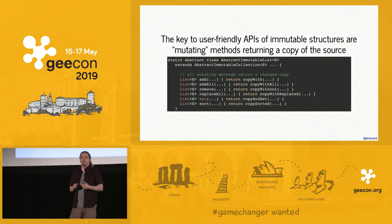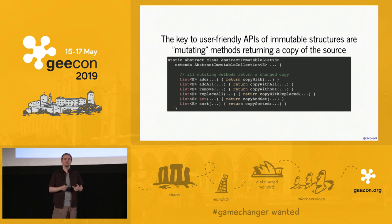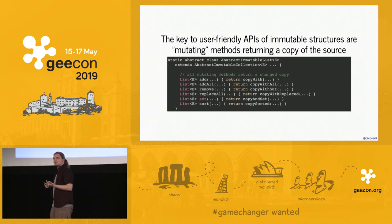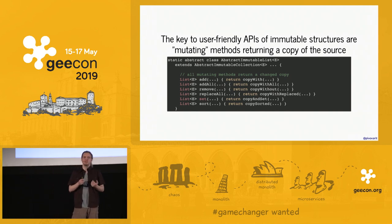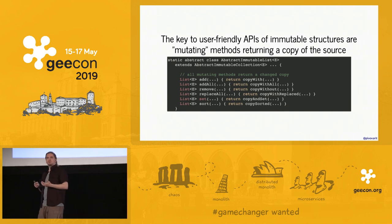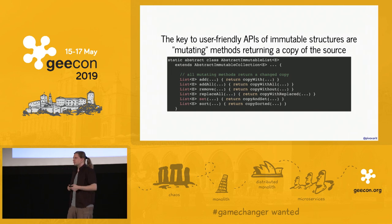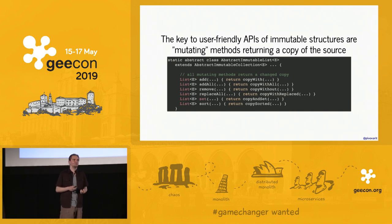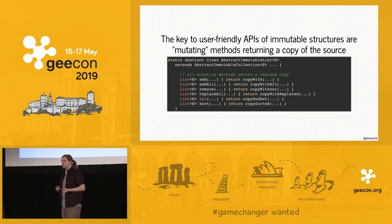What could we do to make it more usable? We'd need to rewrite those APIs. Instead of returning nothing or some metadata, we could spawn a new instance of the collection containing the modification we asked for. So it's not really a mutation of what's internally stored, but more like deriving a new value from what we have. This is actually the key to having user-friendly APIs for immutable structures — you still expose mutable operations, but they give you a new copy containing the change you wanted.